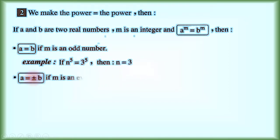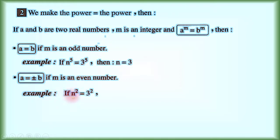If the power is an even number, then a equals positive or negative b. Example: if we have n power 2 equals 3 power 2. Because the powers are equal and the power is an even number, therefore n equals positive or negative 3.